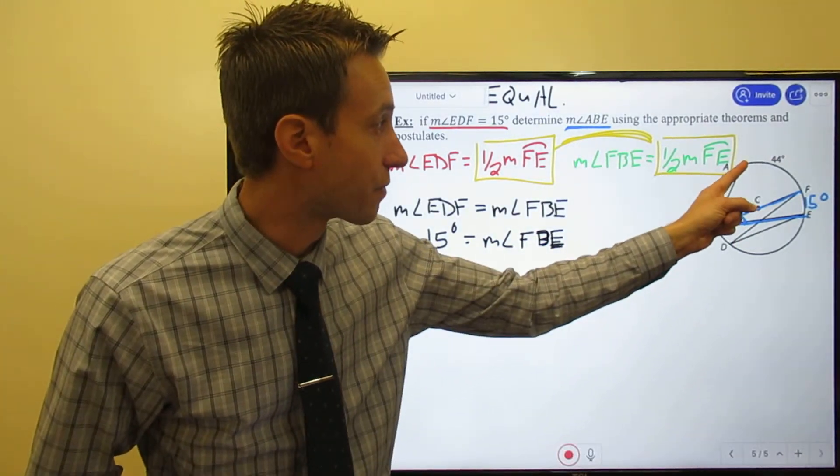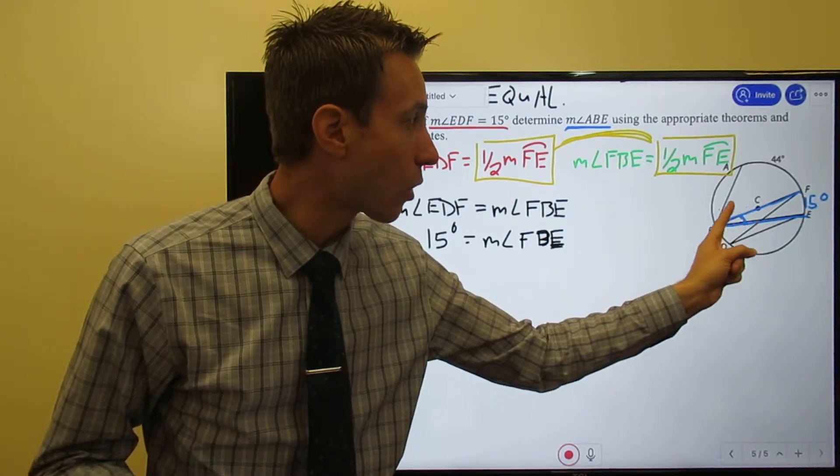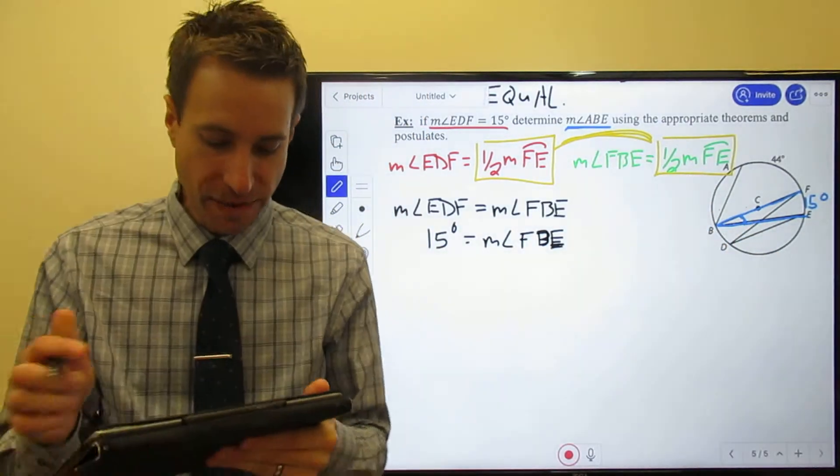All right, fantastic. Well, here's what's going to happen. I know that the measure of angle ABF is one-half the measure of arc AF.